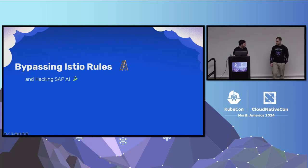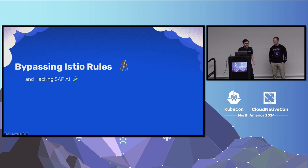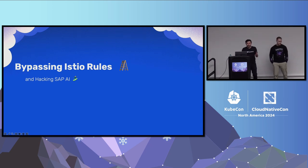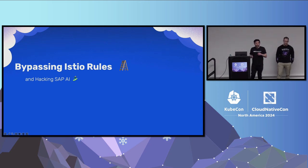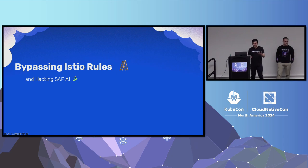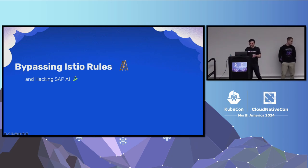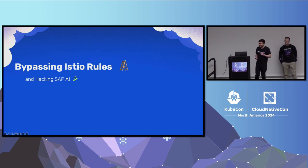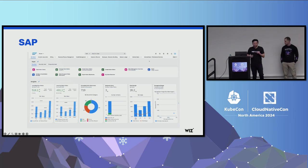Thank you, Nir. So after we saw how we were able to abuse Linkerd in order to hack Azure ML, let's talk about how we were able to abuse Istio, bypass the rules that Istio limited us with, and utilize this to hack SAP's AI service. Let's begin.